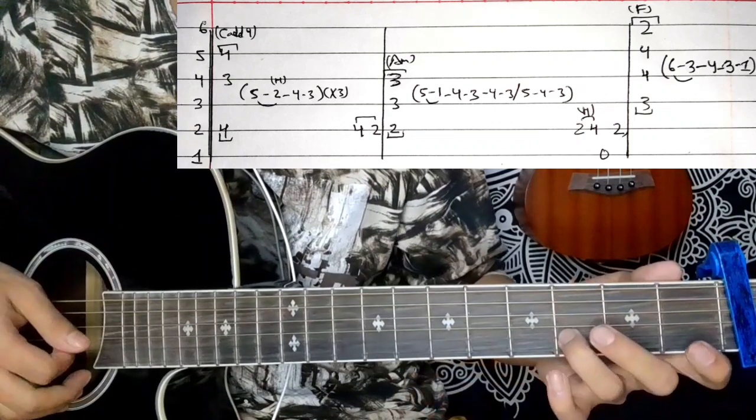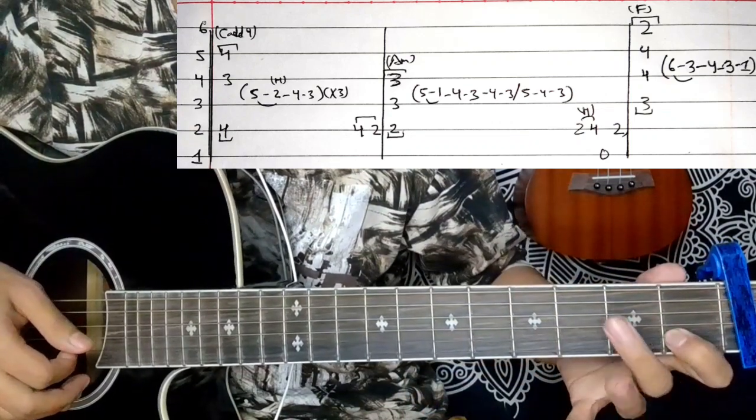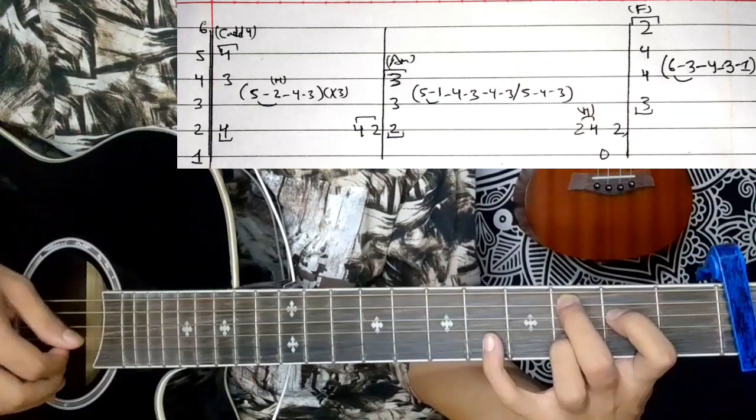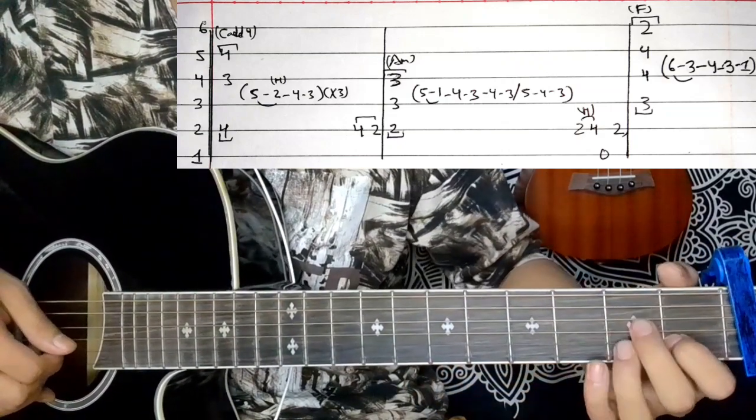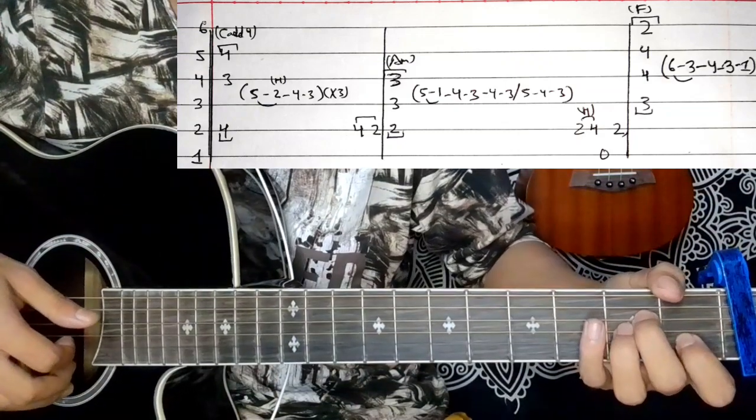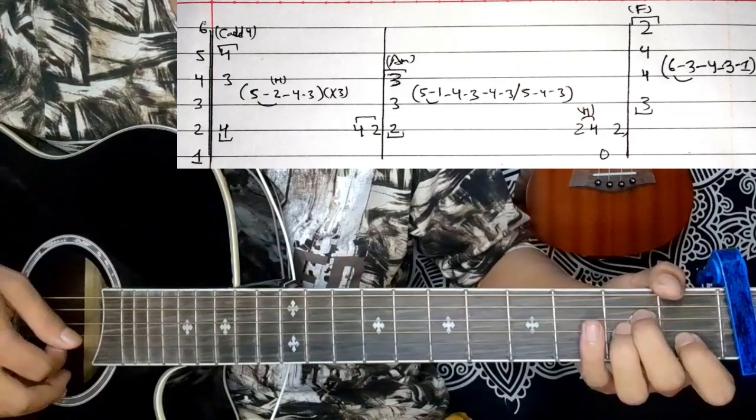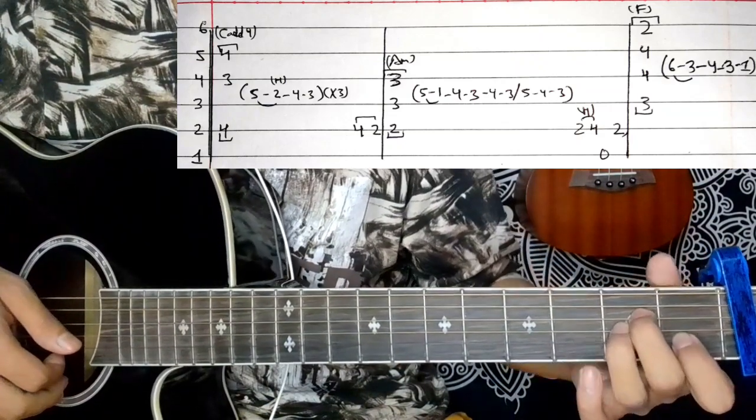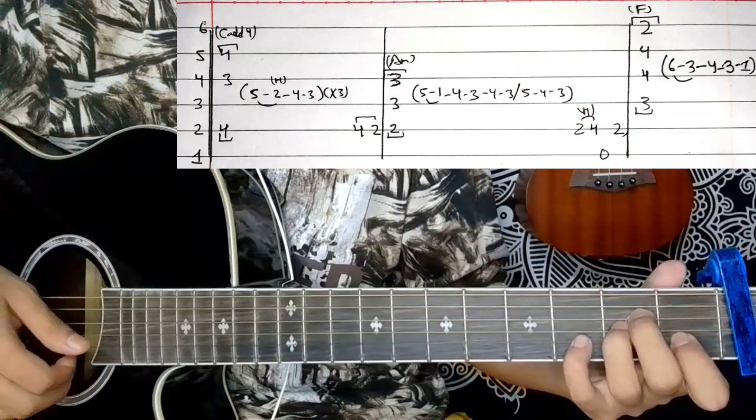On the second string, continue to the A minor chord. The plucking pattern is 5, 1, then picking 4, 3, 4, 3. After that play 5, 4, 3, then second string with hammer-on to first string open.